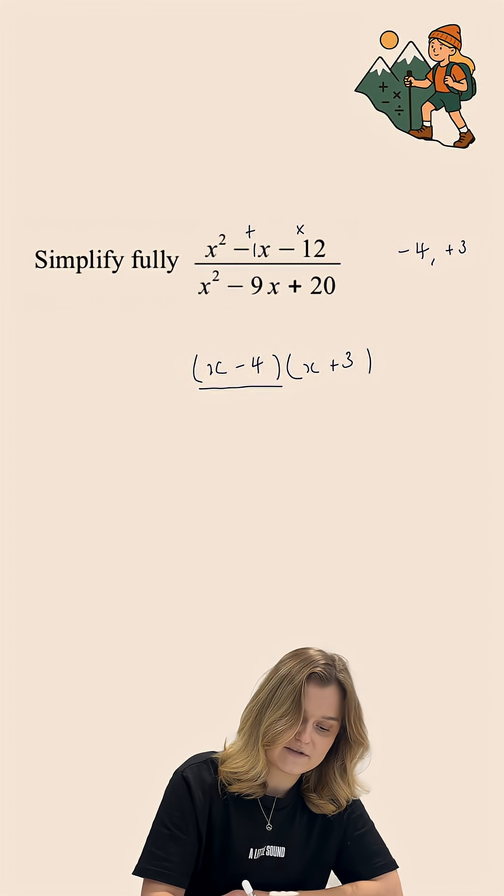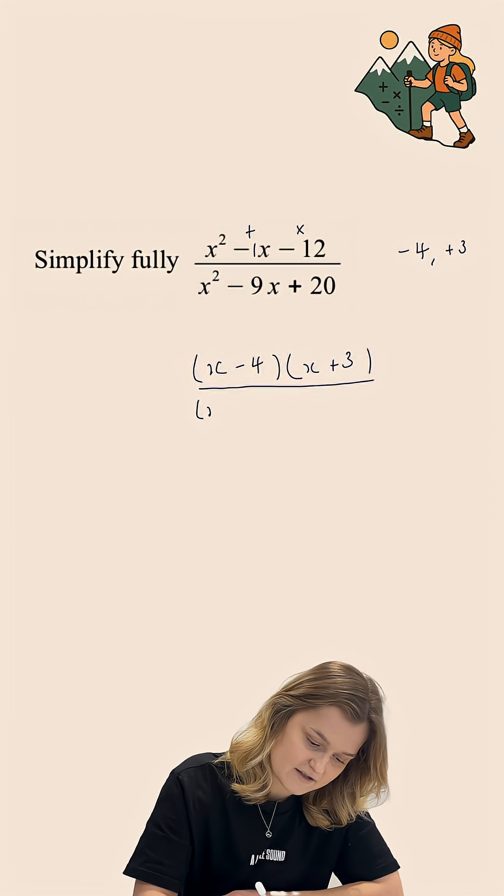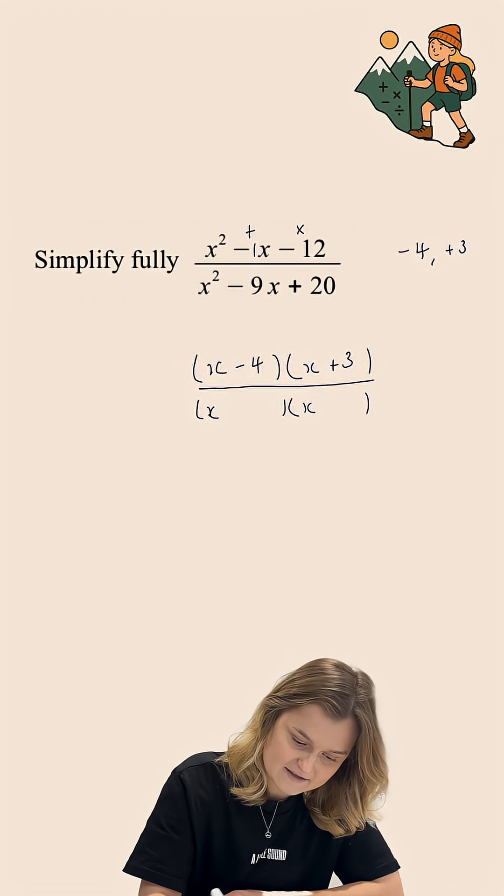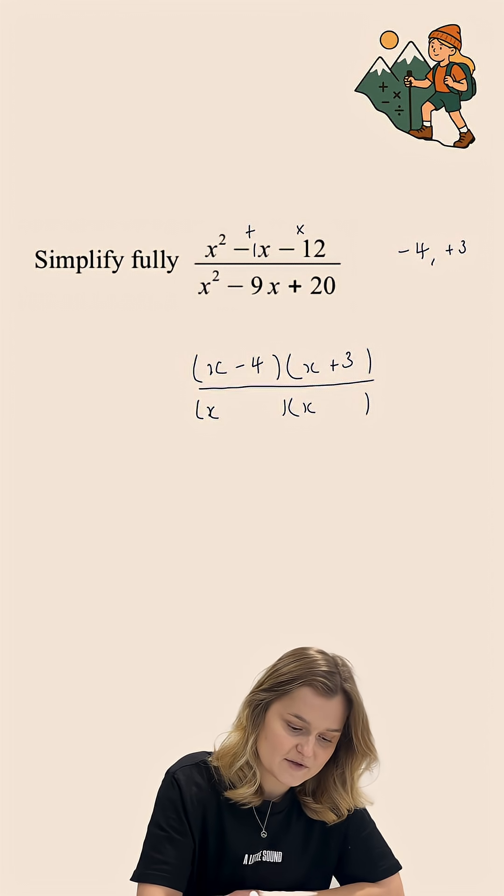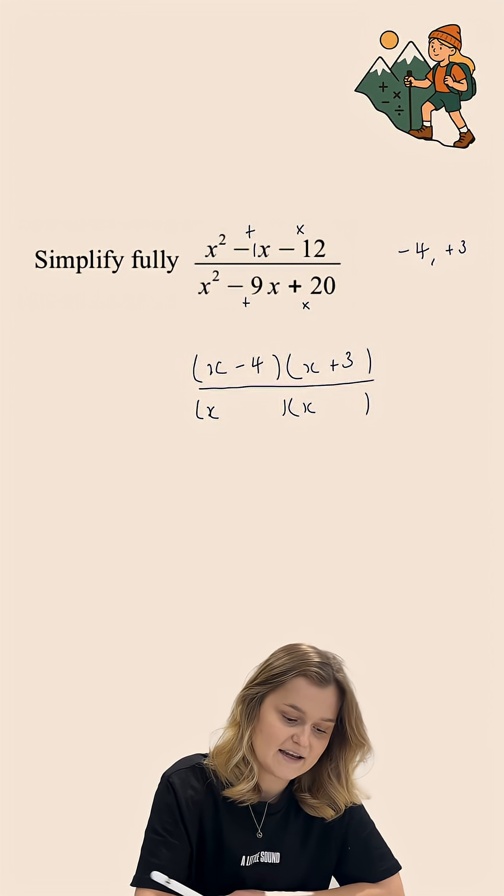Now, on the denominator of this fraction, again, the coefficient of the x squared term is 1, and so my brackets are going to start with x and x. I am then looking for two numbers that multiply together to make positive 20, and add to make negative 9.